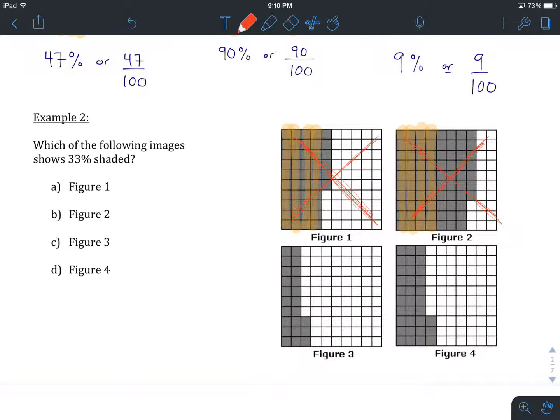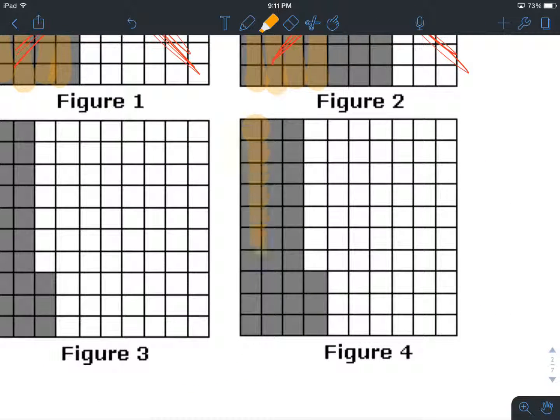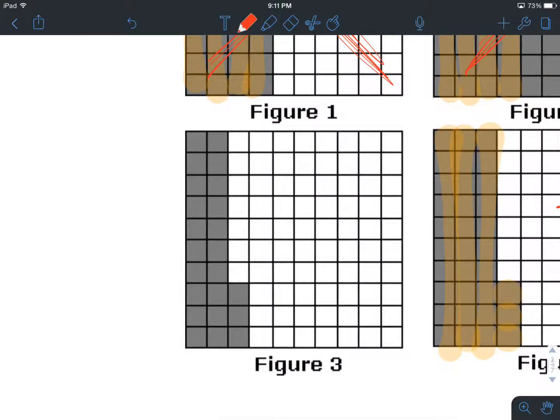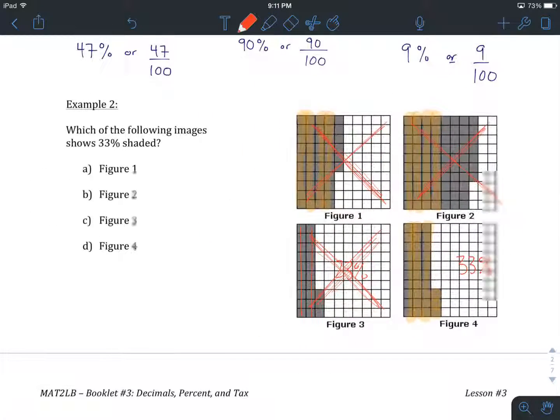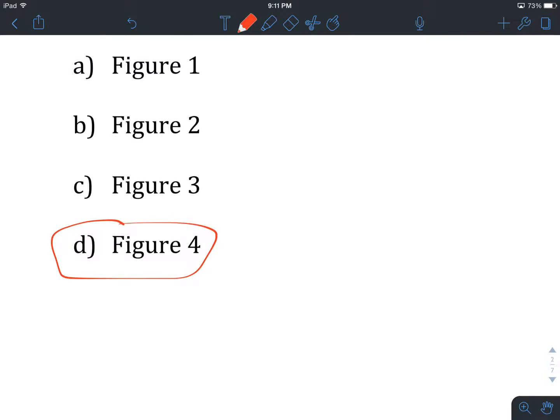Alright, hopefully you've looked ahead and realized that this figure 4 has got 10, 20, 30, 1, 2, 3. This is our correct solution, 33%. This one over here has 10, 20, 1, 2, 3. So this one's got 23%, not what we are after. So if we head back to the question itself, we can circle figure 4 as being the correct answer.